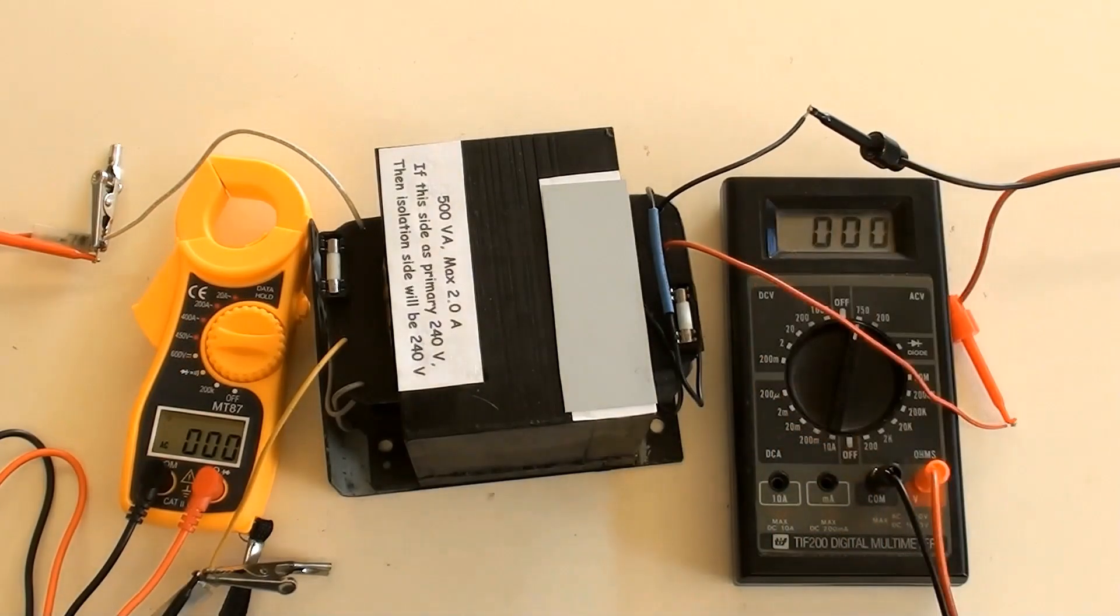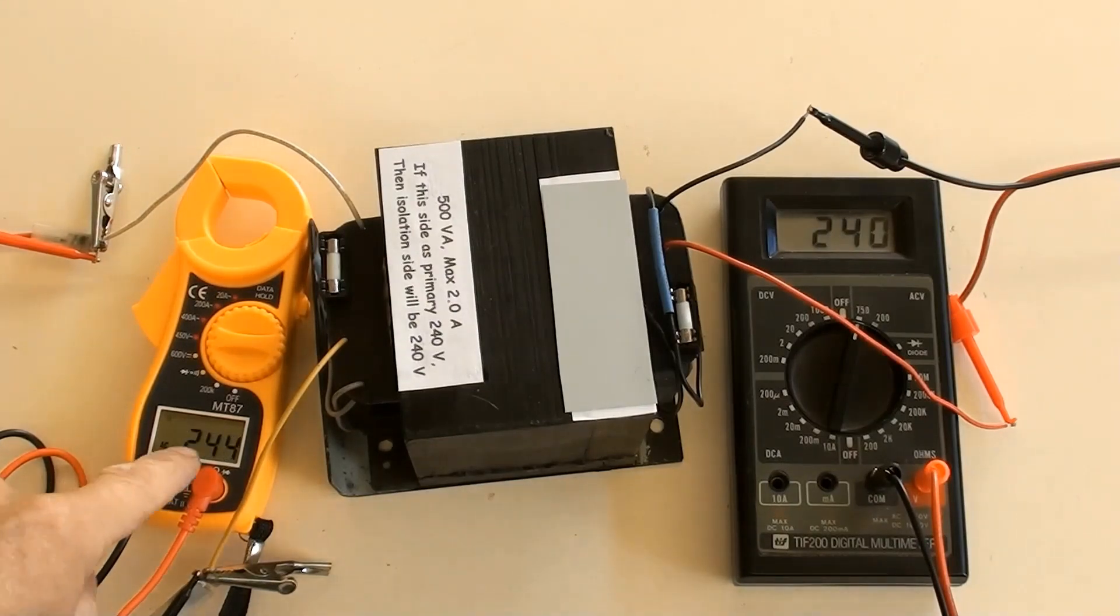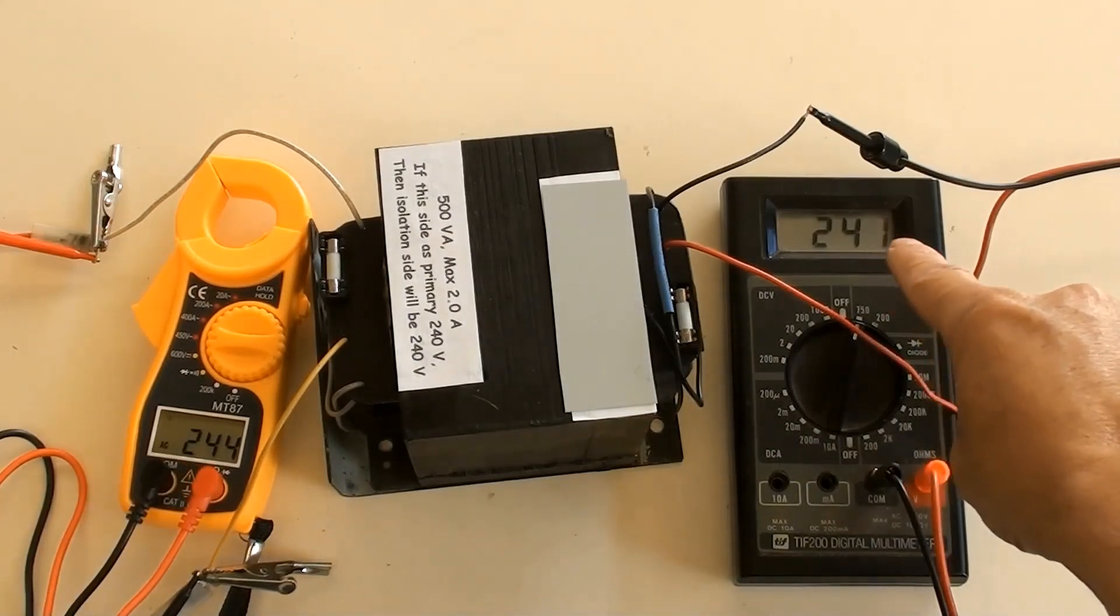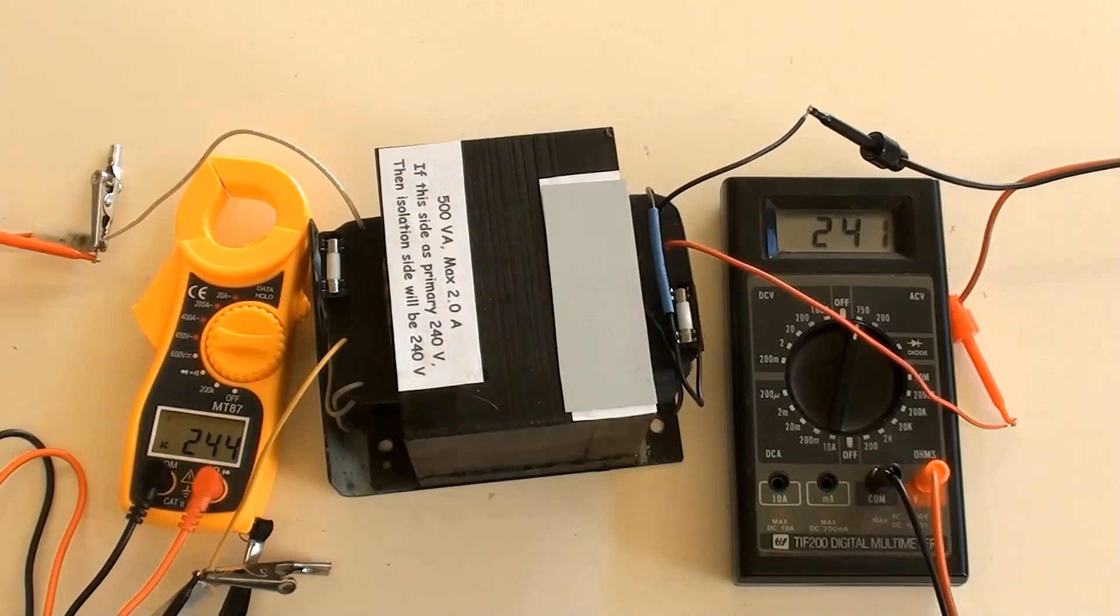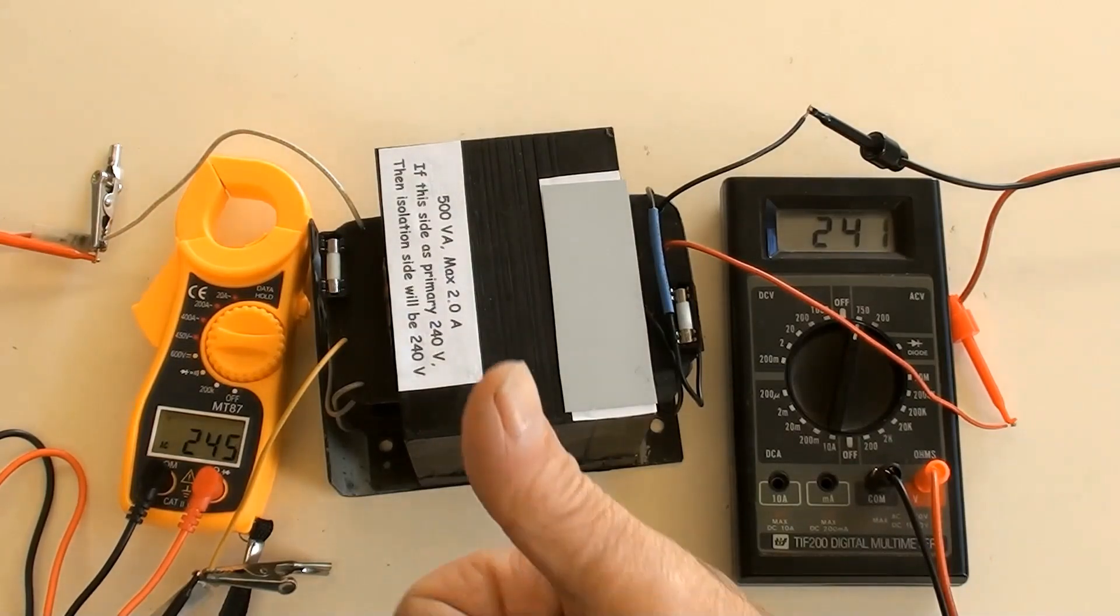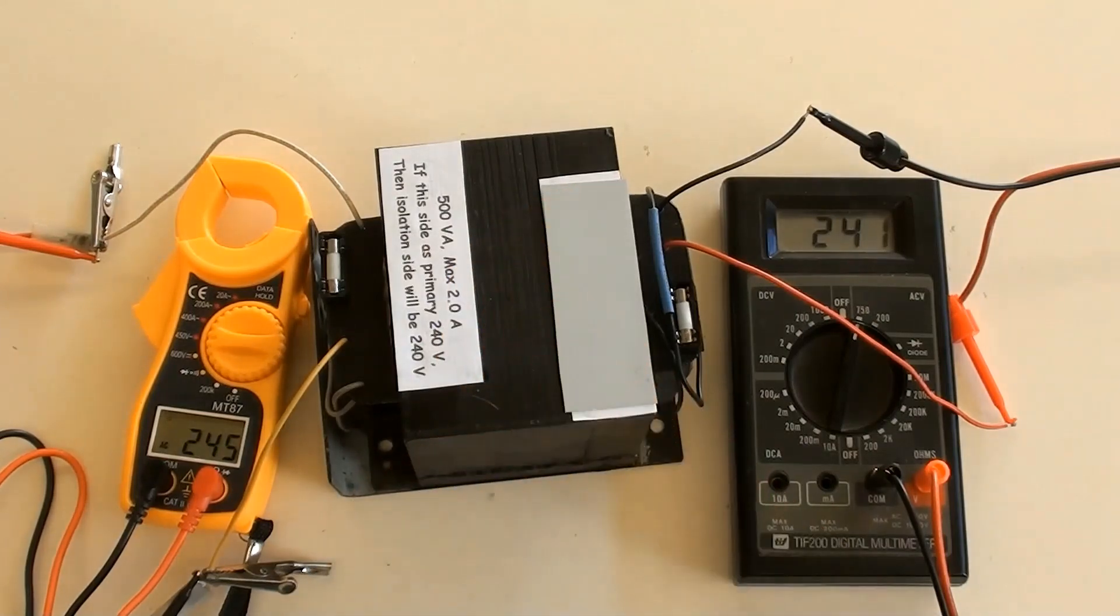These wires are the isolation side now. Switched power on. The voltage on the left primary is 244 volts, and the voltage on the right isolation is 241 volts. Although the two sides voltages are not exactly the same, only a few volts difference, it is quite okay with this tolerance.